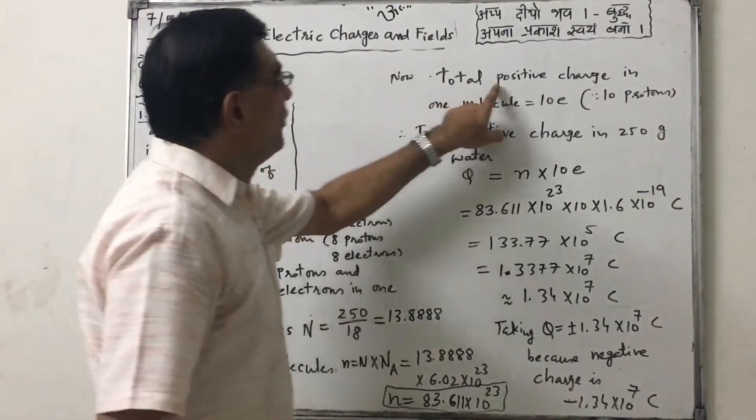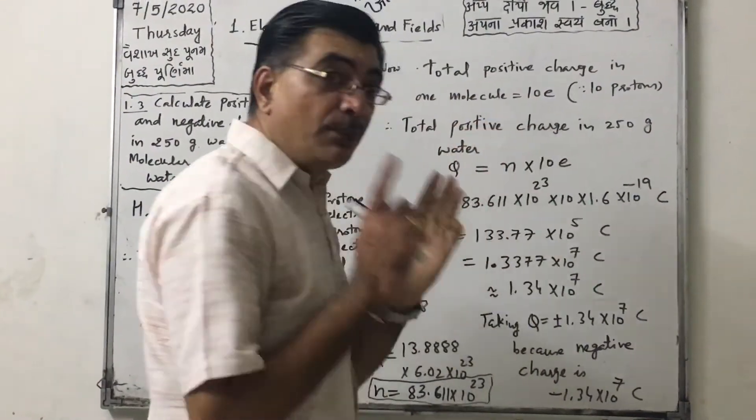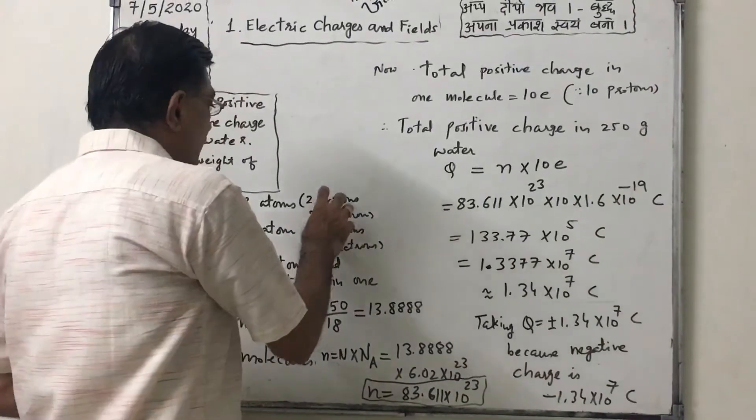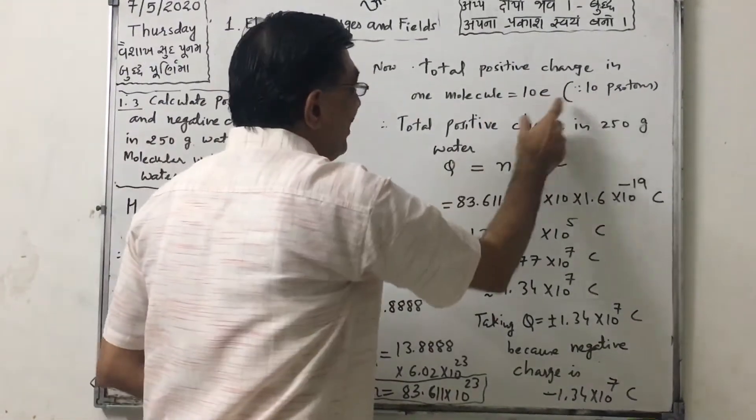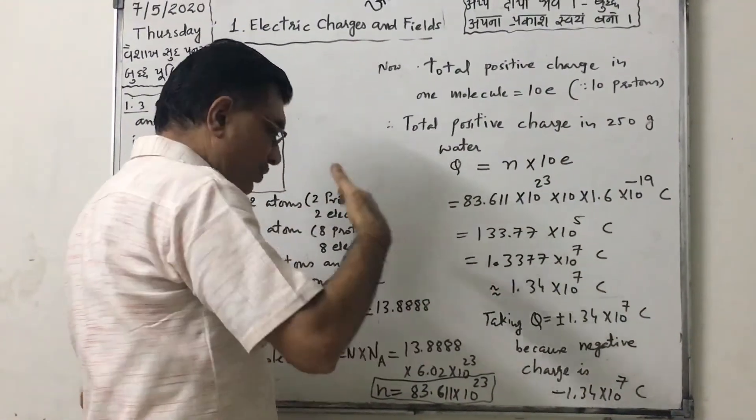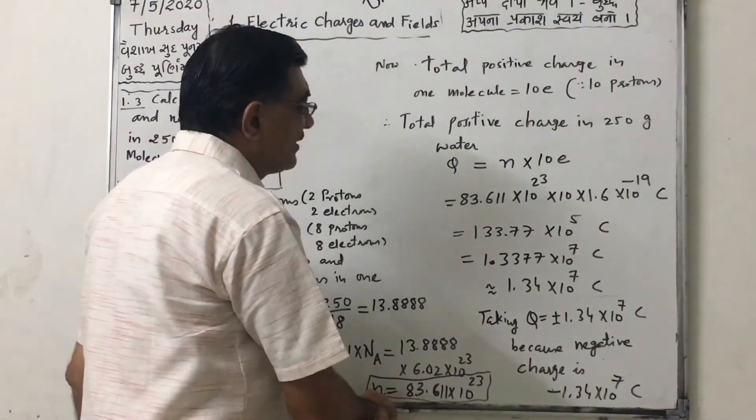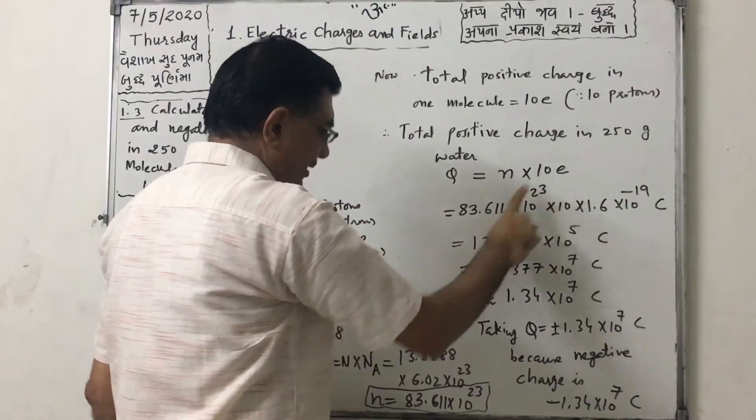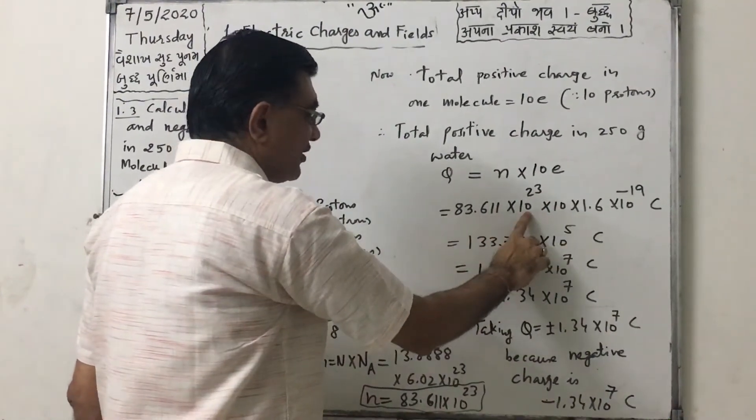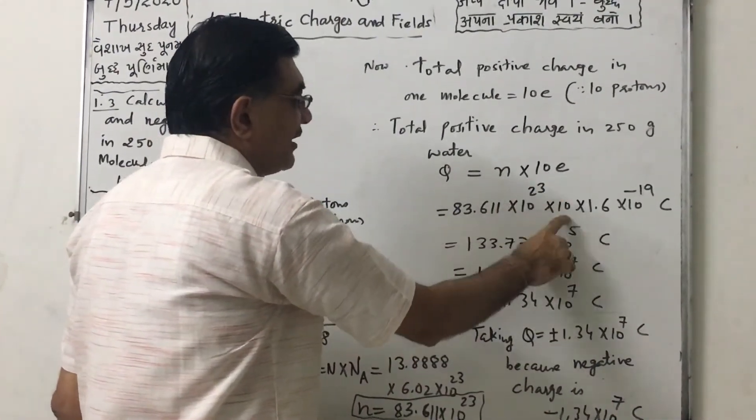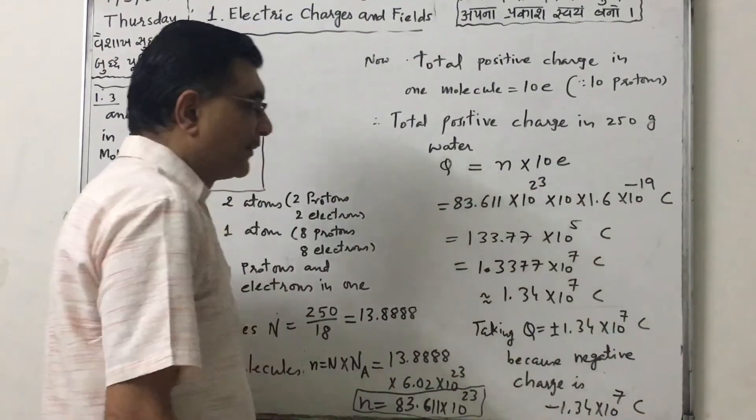Now total positive charge in 1 molecule, that is 10 protons. So it is 10 E. So the total positive charge in 250 gram of water, we have to multiply this number by 10 E. So this is 83.611 into 10 raise to 23 multiplied by 10 multiplied by E value of E.